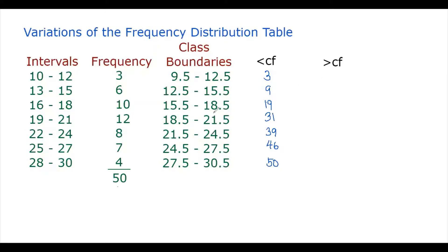The greater than cumulative frequency distribution counts the number of observations greater than the lower class boundary. Since we're going to ask how many observations are greater than 9.5, this should obviously be 50, since your observations are from 10 to 30. It's best to start with the highest interval. How many observations are greater than 27.5? Since observations in that interval are from 28 to 30, there are 4 observations greater than 27.5.